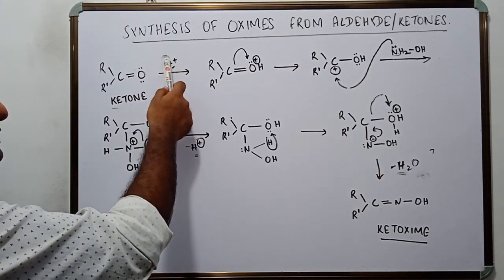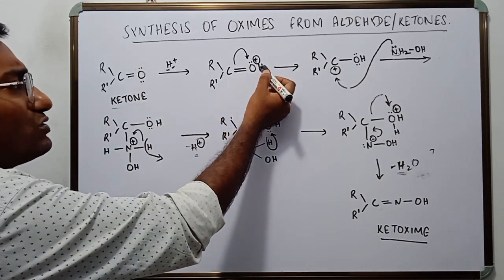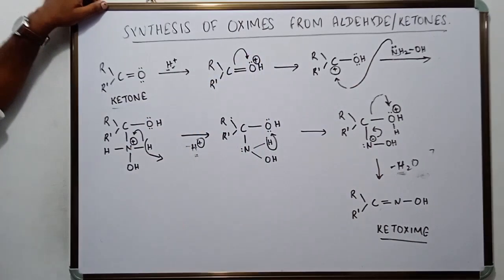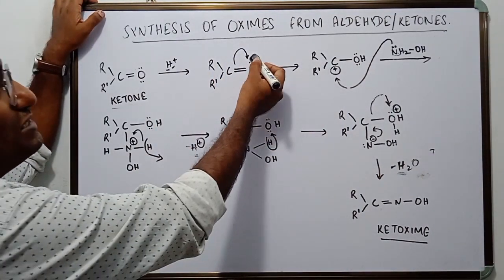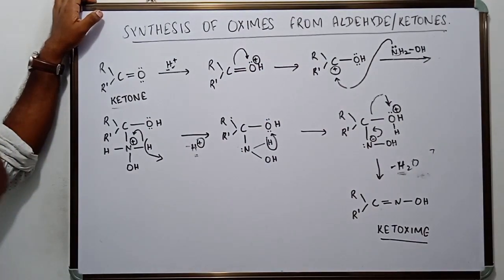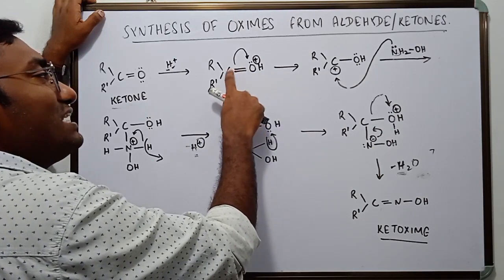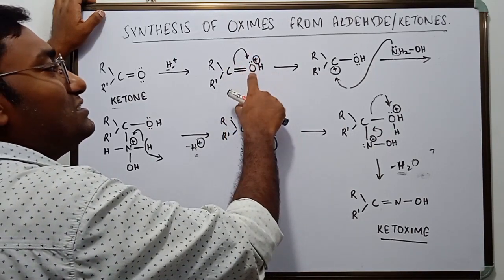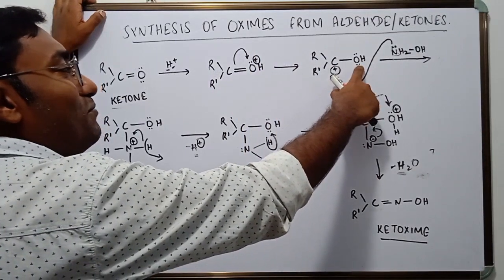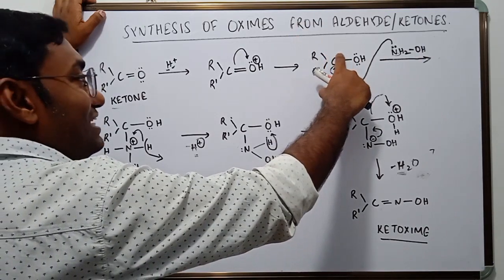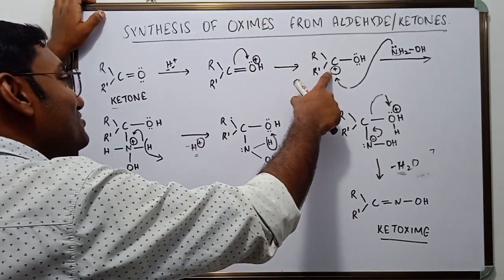When the acid's H+ protonates the oxygen, it becomes positively charged and, being already electronegative, becomes even more electronegative. It then snatches the electron pair it shares with carbon, causing that electron pair to drift towards oxygen. This restores oxygen's lone pair, but because carbon has lost one of its electrons from the shared pair, the carbon atom now carries a unit positive charge.